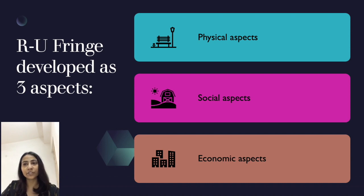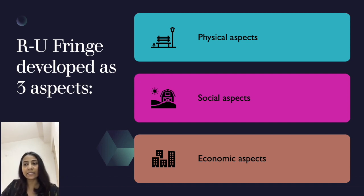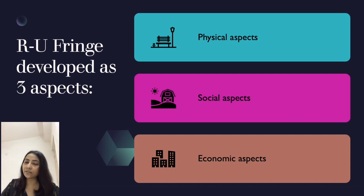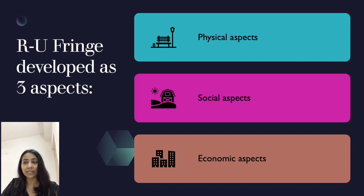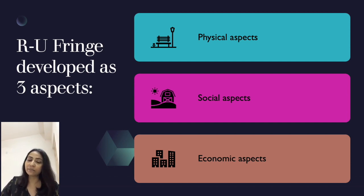The rural-urban fringe produces three different aspects: physical, social, and economic. In the physical aspect, we can see increasing physical infrastructure in the rural areas. In the social aspect, as urbanization increases and moves to rural areas, there is conflict between two ways of life — urban life and rural ways of life. The economic aspect can be understood through urban expansion on agricultural lands; agricultural lands are taken and urban amenities are built, affecting the economy of the region.